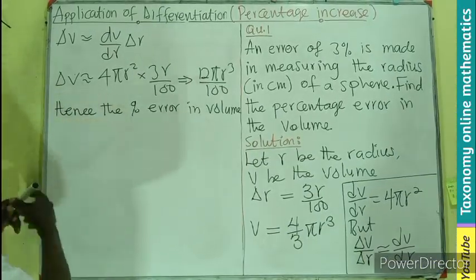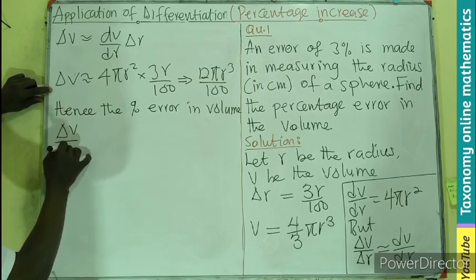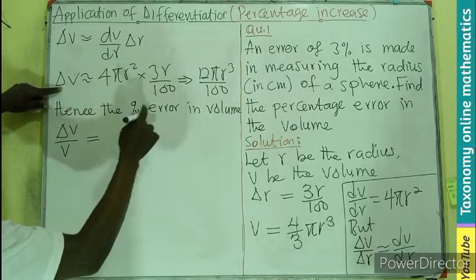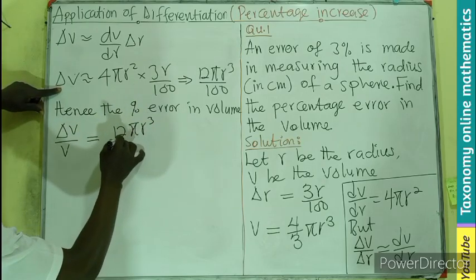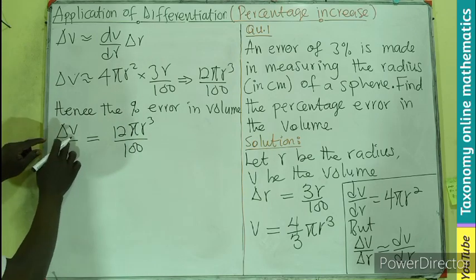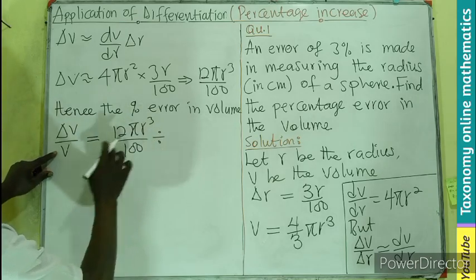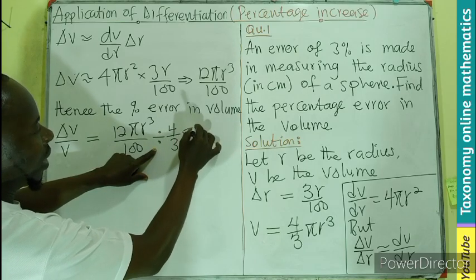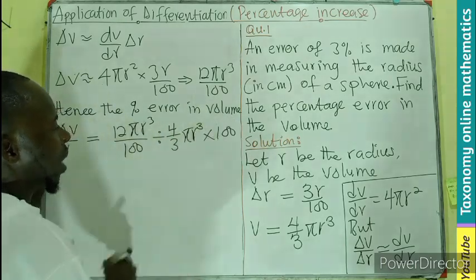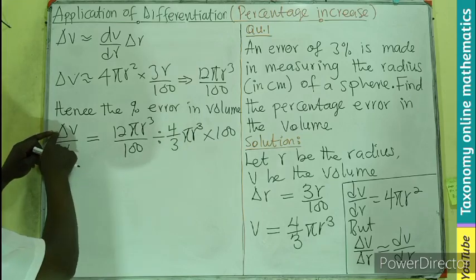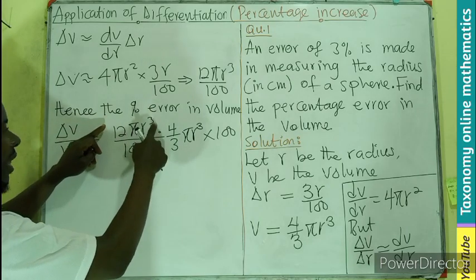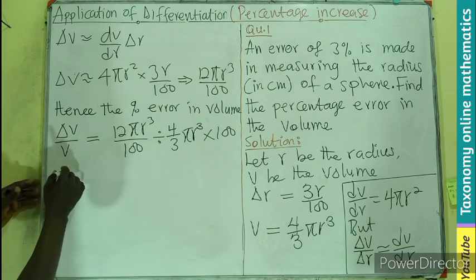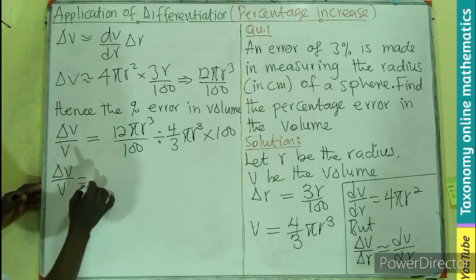So if this small change is known, what is next? The next is to find the percentage. Hence, the percentage error in volume is going to be delta V over V times 100. So delta V is 12 pi r cubed divided by 100, divided by V. Where is V? We know V as 4 on 3 pi r to the power 3, then times 100.